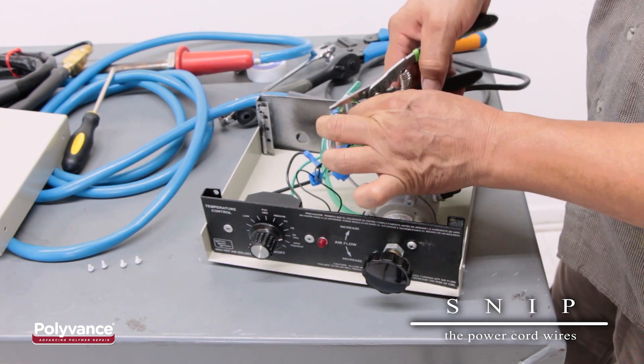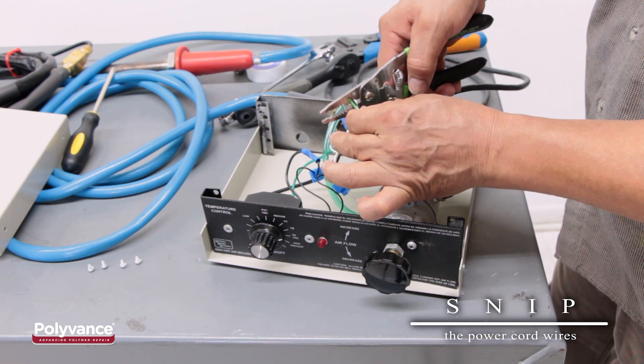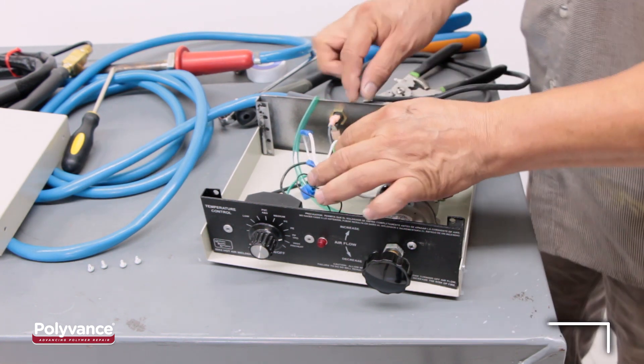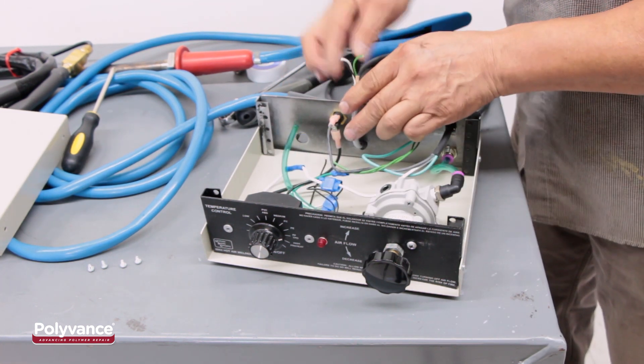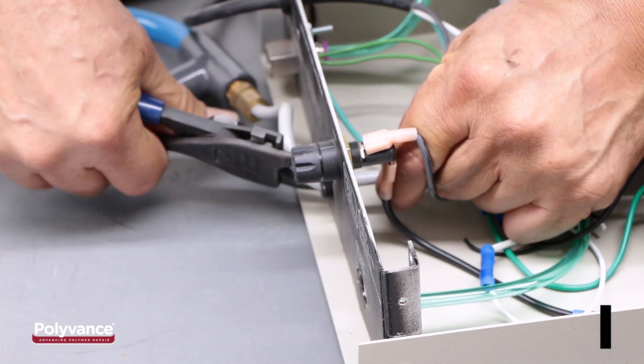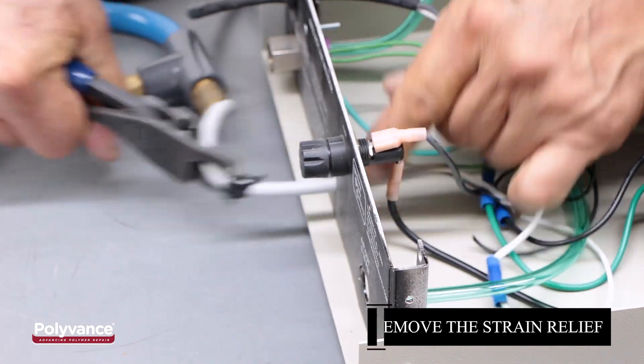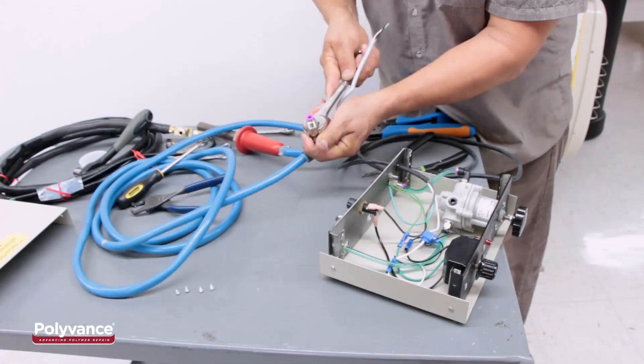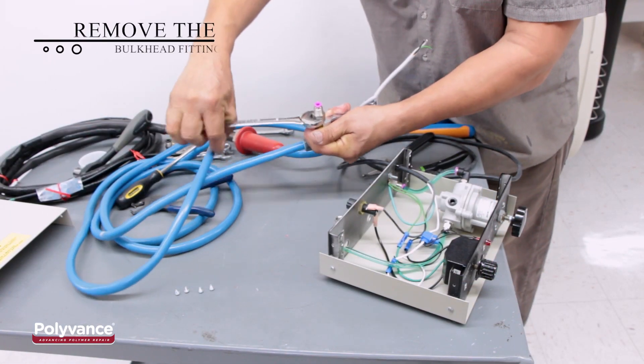Snip the power cord wires close to the outer sheath to keep the remaining wires long. Remove the strain relief from the old power cord. Remove the bulkhead fitting from the old hose.